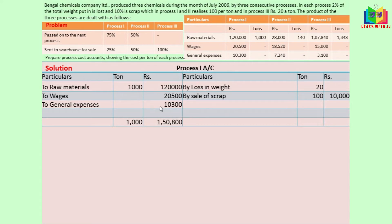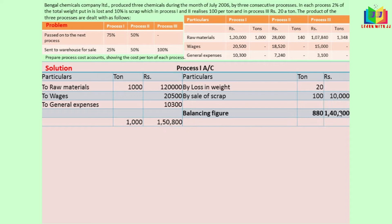Now we find the balancing figure. On the debit side in tons we have 1000 units; on the credit side we have 120. Subtracting 120 from 1000 gives us the balance. The total debit side is 1,50,800 rupees and the credit side has 10,000, so subtracting gives a balancing figure of 880 tons and 1,40,800 rupees. This needs to be divided into 75% and 25%, because 25% is sent to warehouse for sale and 75% is transferred to the next process.